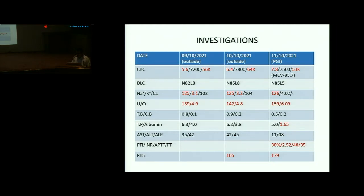At PGI, hemoglobin was 7.8 and platelets 53,000 with no leukocytosis. There was hyponatremia and hypokalemia; hypokalemia was corrected but hyponatremia persisted. Urea and creatinine were elevated. LFT was normal from outside, but albumin was 1.65 at PGI. Coagulopathy was detected with PT of 38%. RBS was 165 outside and 179 at PGI.